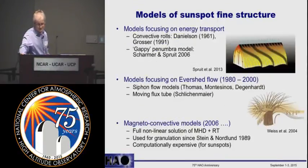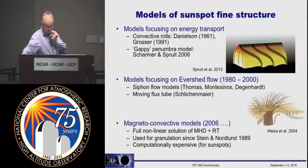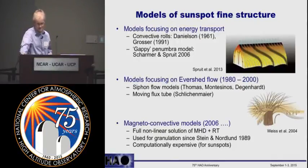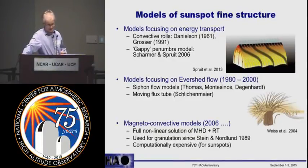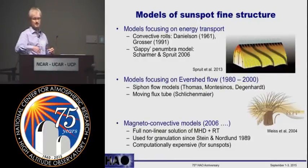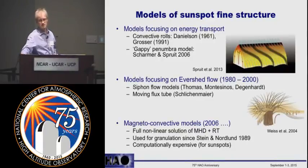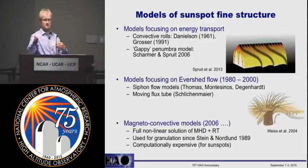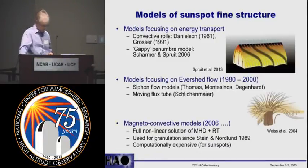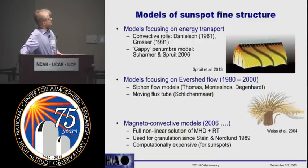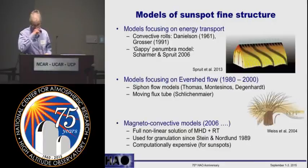With regard to models of sunspot fine structure, this is a field which for some time went in circles. I mentioned that after the high-resolution balloon observations, Danielson proposed that penumbra filaments are convection cells — elongated convection rolls. But this model was not popular for a long time, mostly because there was never really direct evidence in observations for overturning convection in the penumbra. The dominating flow is the Evershed flow, which corresponds more to a flow from the inner penumbra to the outer, not in the vertical direction. So this model, even though in retrospect it was pretty much what the penumbra is, was dismissed for a long time.